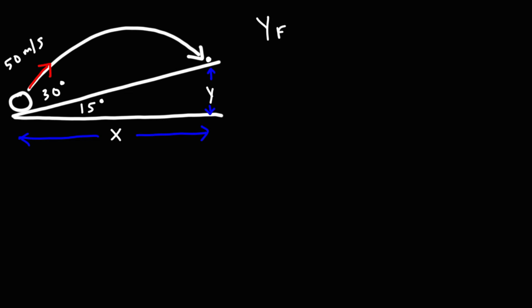So starting with y, we could use this equation. y final is equal to y initial plus vy initial t plus 1 half at squared. So this is going to be our initial position. So we could define it as point a and point b is our final position. At point a, we're basically launching a projectile at ground level. So y initial is going to be zero. Now vy initial, so here we have v at 50 meters per second. It has an x component and it has a y component.